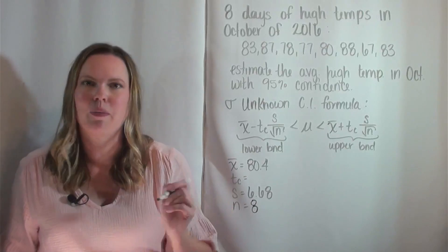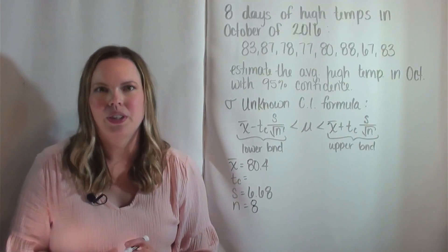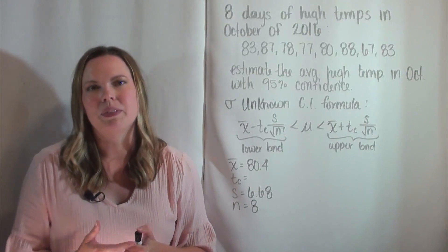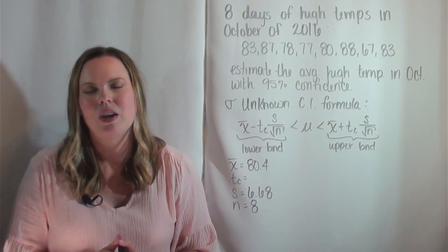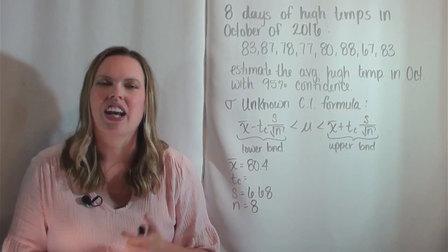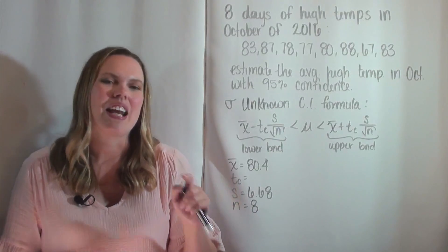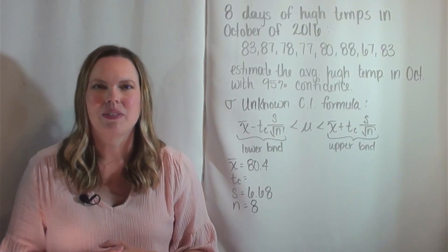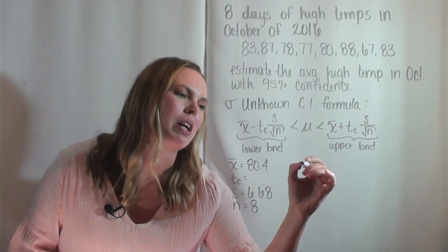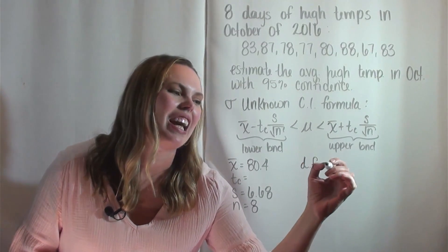Now let's talk about how to find this T sub C. Since we don't know sigma, our data is no longer normally distributed, but it does fit something called the T distribution, also referred to as the student's T distribution, and I will link it down below in the description. In order to find T sub C, you need something called the degrees of freedom.